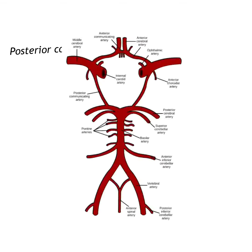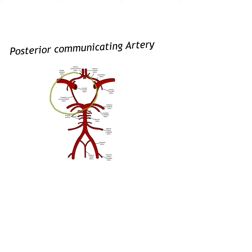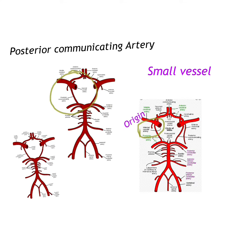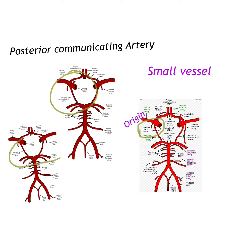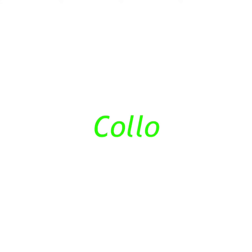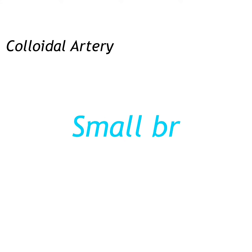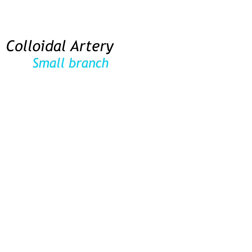The next branch is the posterior communicating artery. It is a small vessel that originates from the internal carotid artery. It combines with the posterior cerebral artery to form the Circle of Willis.